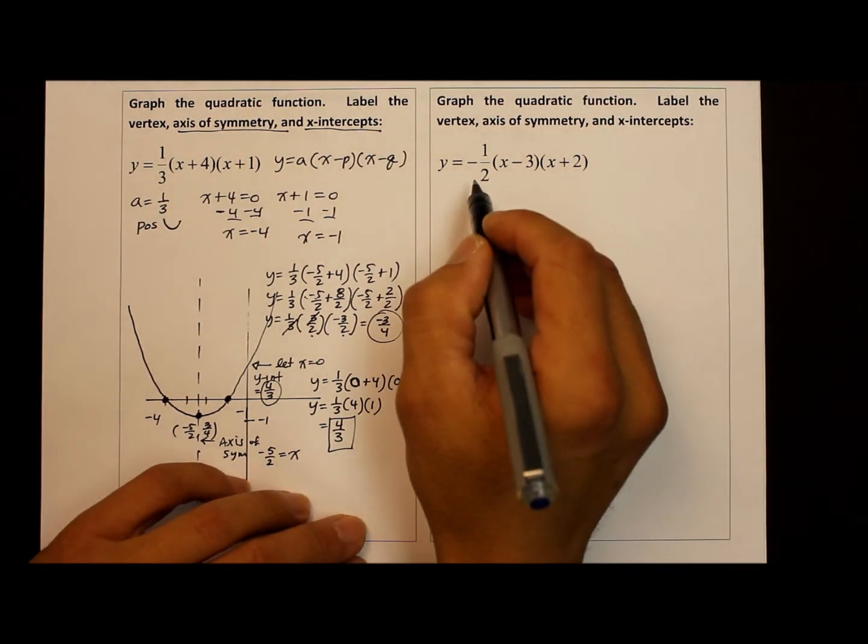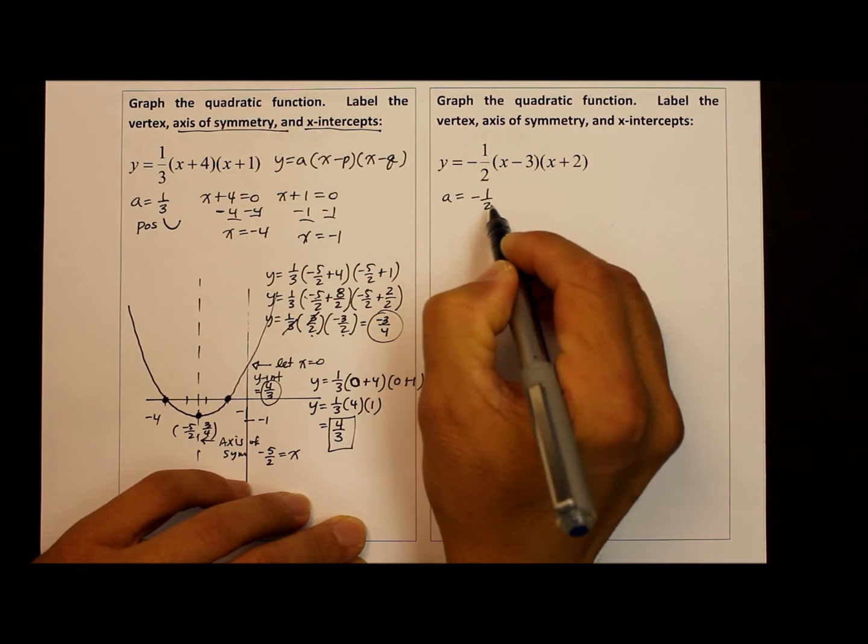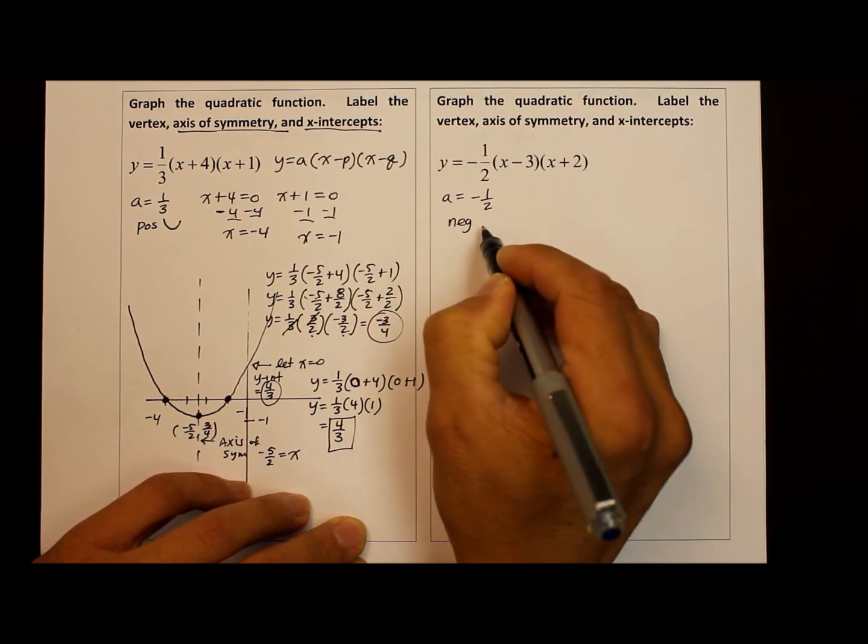Now, this equation, right from the beginning, we notice that the a-value is negative, negative one over two. So we know that since it's negative, the parabola is going to open downward.